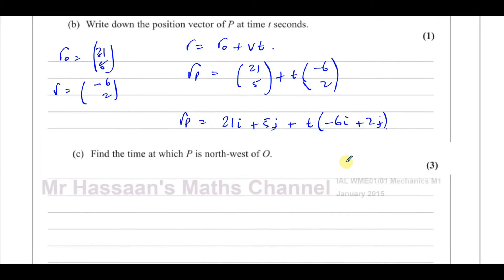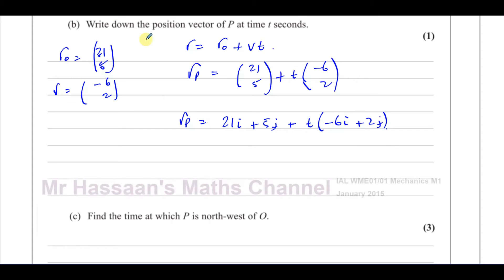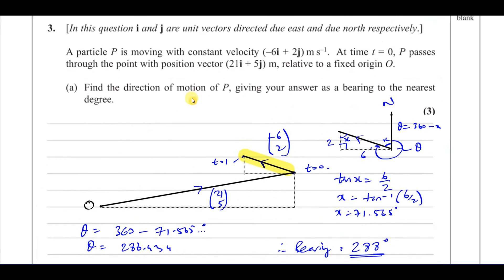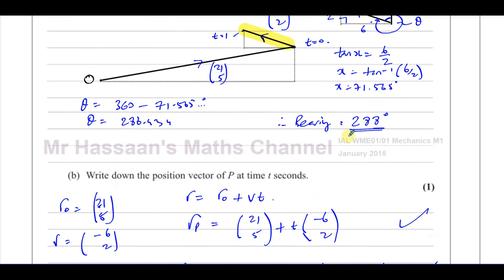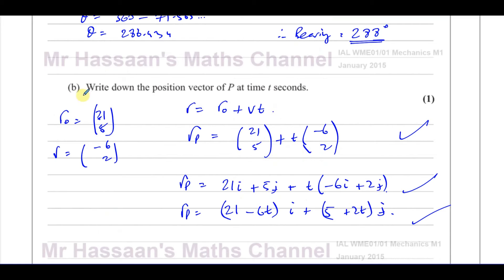Alternatively, you can expand and write it as (21 minus 6t)i plus (5 plus 2t)j. So there are different ways to write it — all of them are correct. I like to write things in column vectors for calculations, but since the question gave everything in terms of i and j, it would be better to write the final answer in that form.